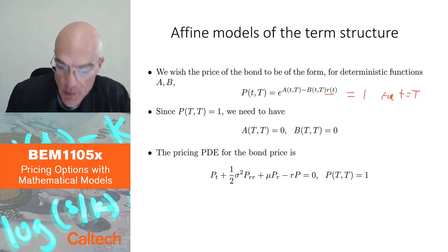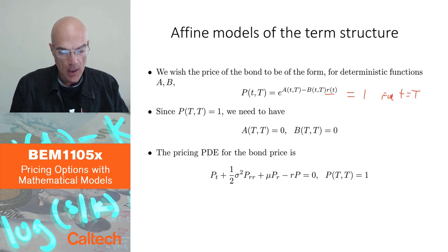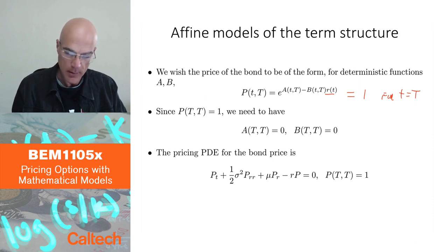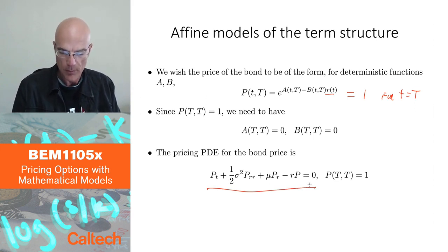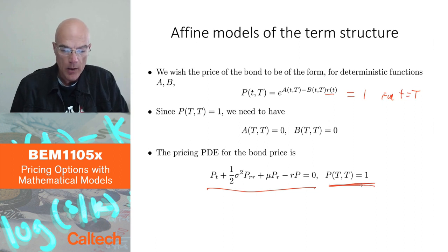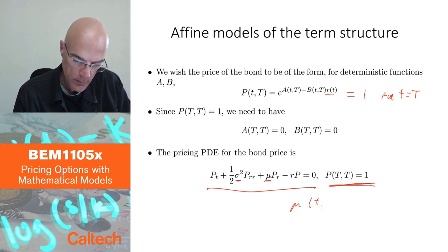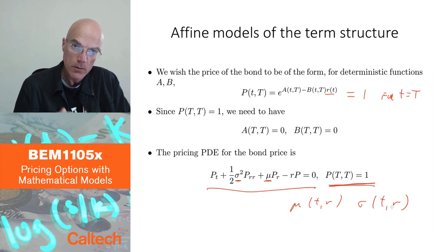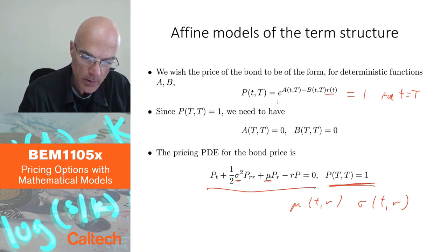So those are the boundary conditions: B has to be zero at maturity to give a bond value of one dollar. The price satisfies the partial differential equation from the previous slide — I'm rewriting it here using P for bond price. The question is for which functions μ(t, R) and σ(t, R) the solution to this PDE is in fact of this exponential form.